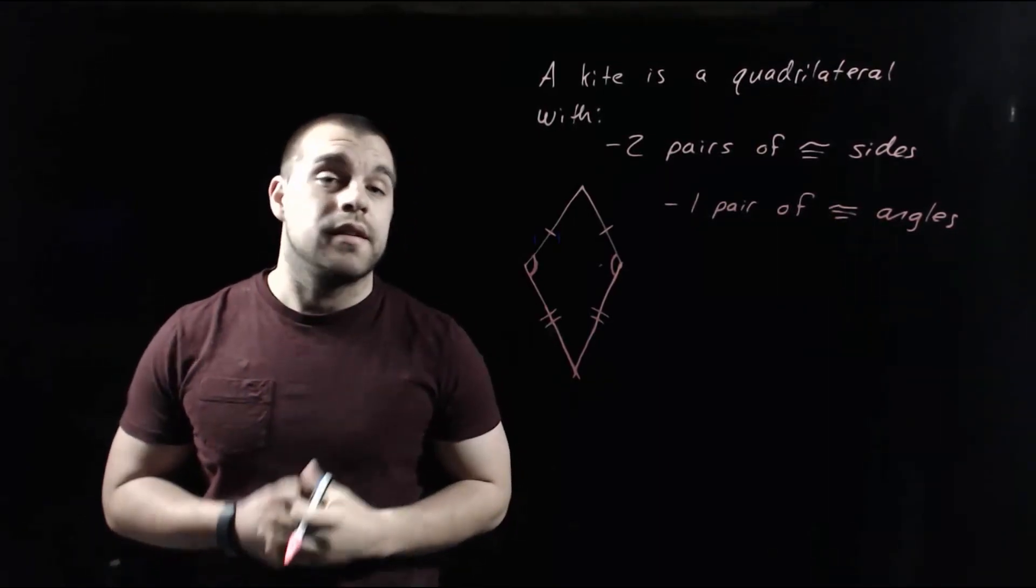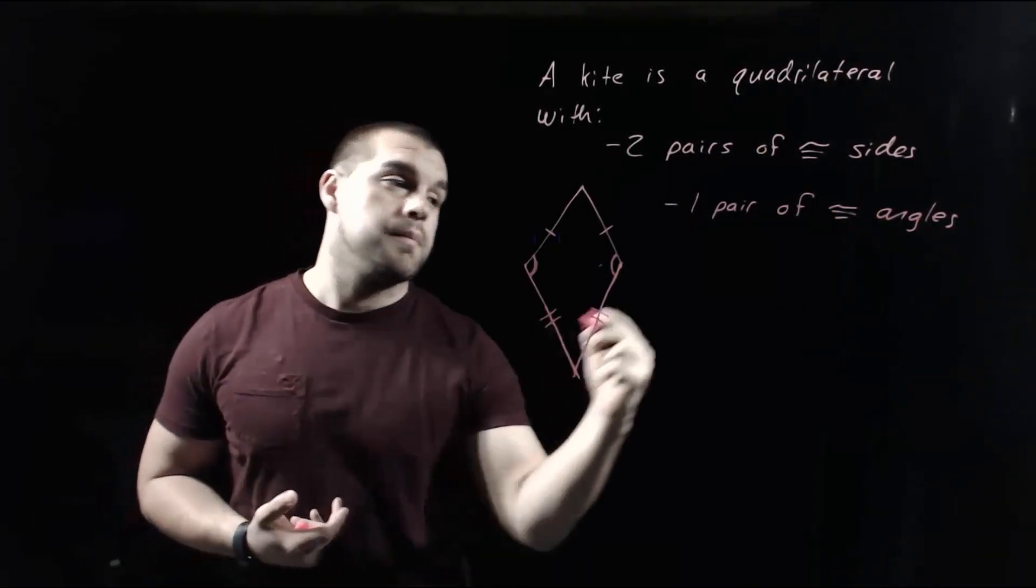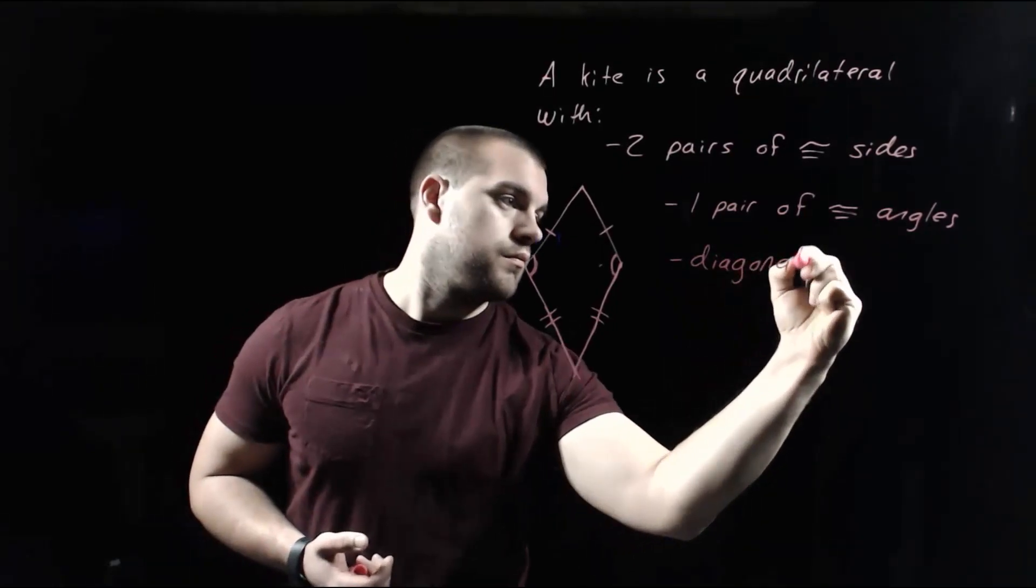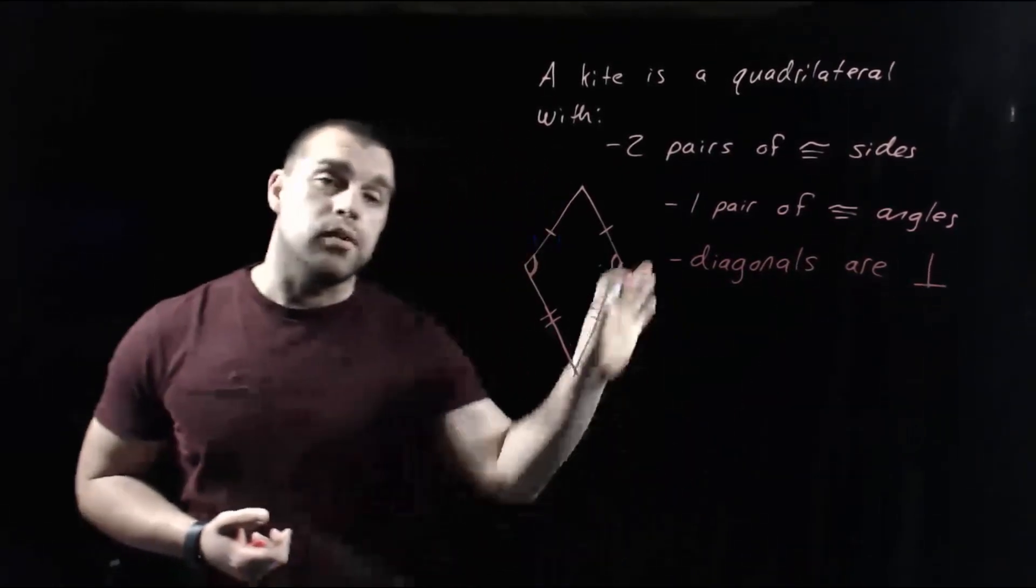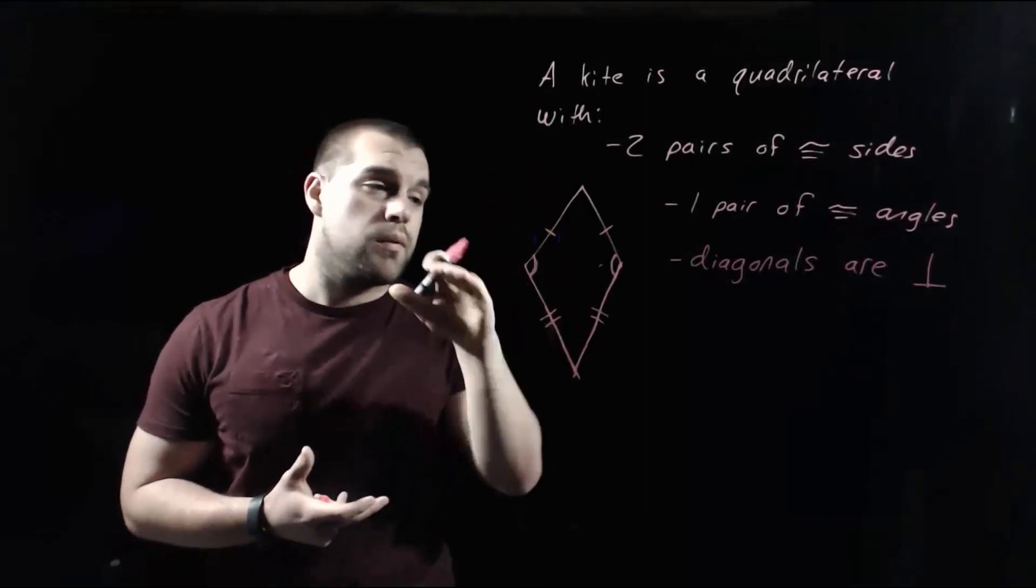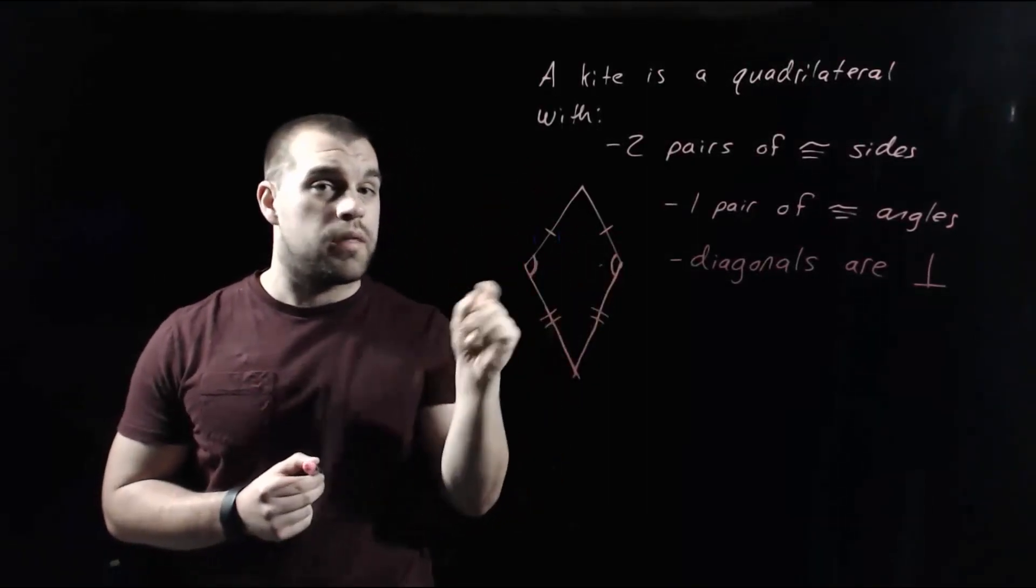Our next property is that the diagonals are perpendicular. Remember, we use that upside-down T to mean perpendicular. So if we were to draw in these diagonals where they intersect, it would create a whole bunch of right angles.